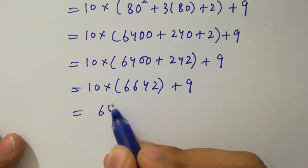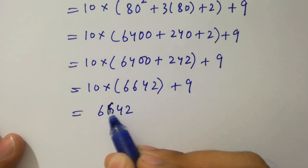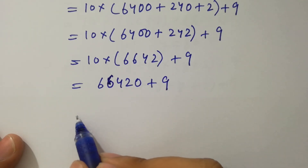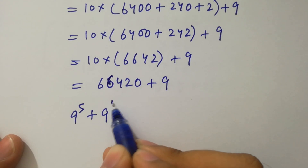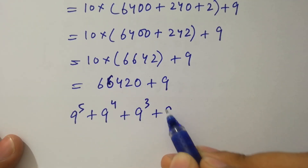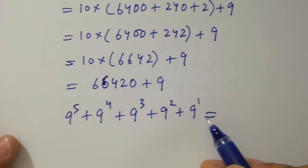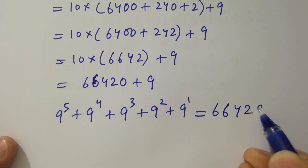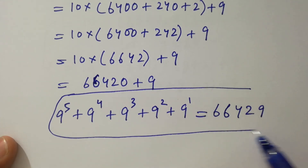So 9 to the power 5 plus 9 to the power 4 plus 9 to the power 3 plus 9 squared plus 9 to the power 1 will be equal to 66,429, which is our final answer.